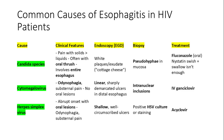CMV causes odynophagia without oral lesions and has linear sharply demarcated ulcers in the distal esophagus with intranuclear inclusions, treated with IV ganciclovir. Herpes simplex virus presents with abrupt oral lesions and has shallow, well-circumscribed ulcers. Biopsy shows positive HSV culture on staining, and treatment is with acyclovir.